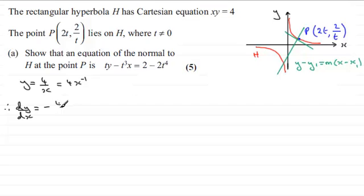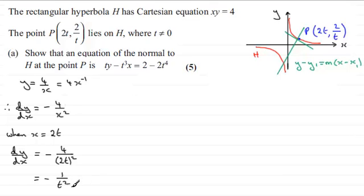So when it comes to differentiating this, we've got dy by dx equals minus 4x to the minus 2, which is really minus 4 over x squared. Now, we're looking for the gradient at the point where x equals 2t. So if we put when x equals 2t into dy by dx, we have dy by dx equals minus 4 over 2t squared, that's minus 4 divided by 4t squared, which reduces down to minus 1 over t squared.